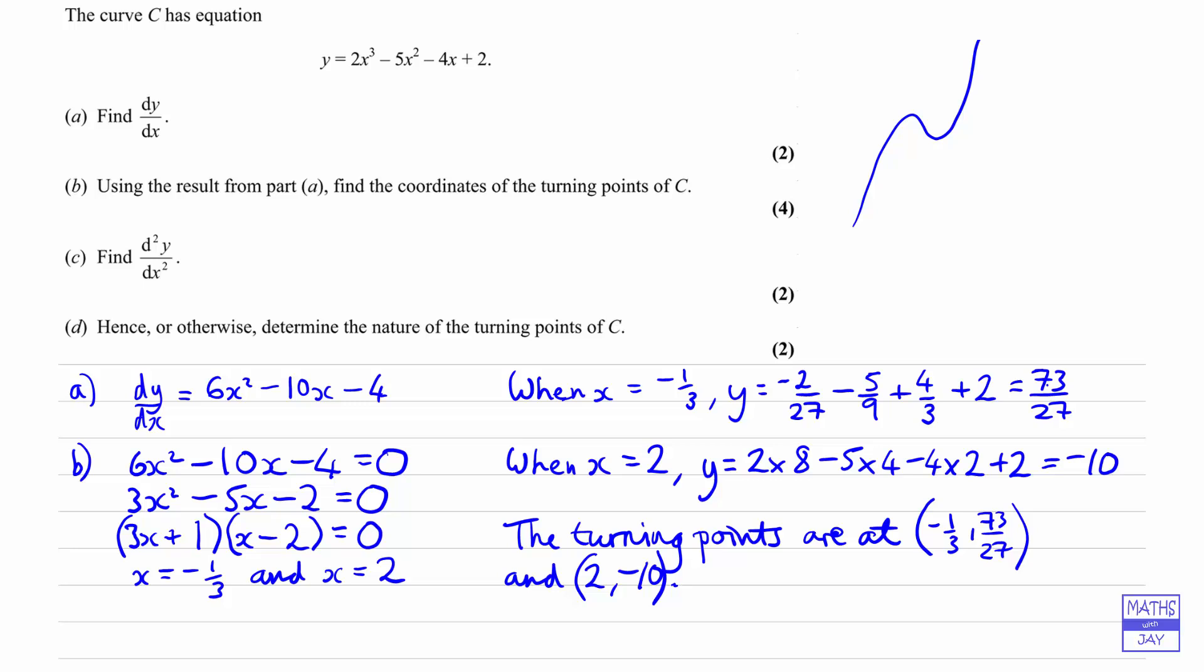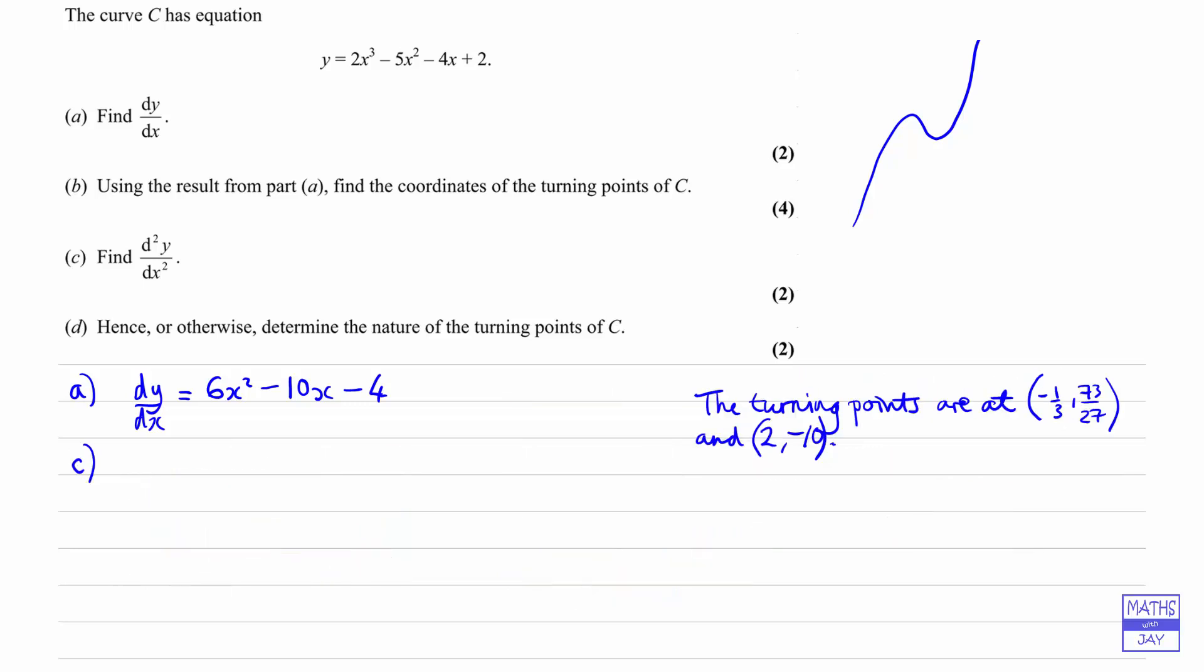That's parts A and B answered. Now let's look at part C. In part C, all we have to do is differentiate dy by dx. So we're looking back at part A and just differentiating that. So the second derivative of y is the derivative of dy by dx, which is going to give us 2 times 6x, so 12x minus 10. So that's part C done.